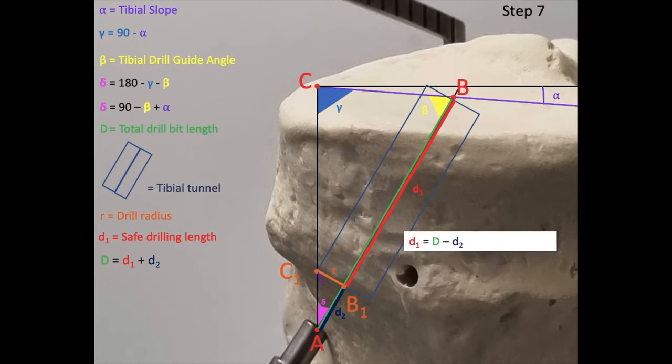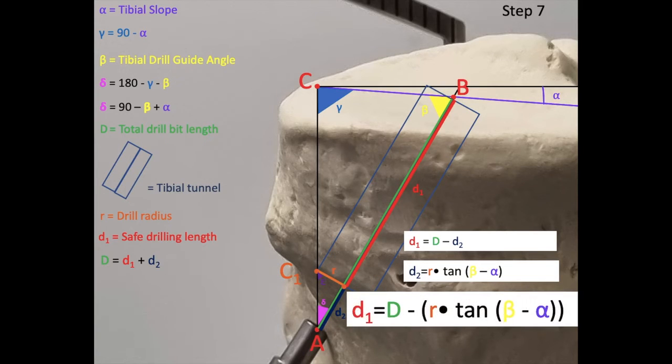Finally, we want to calculate our safe drilling length. Because D1 is equal to D minus D2, and we previously solved for D2, we can therefore conclude that our safe drilling length, or D1, is equal to our total drill bit length minus the radius of the tibial tunnel, times the tangent of the tibial drill guide angle minus the tibial slope.